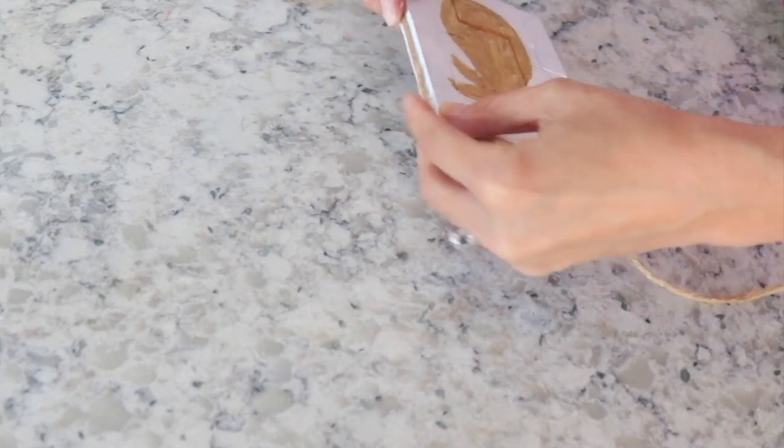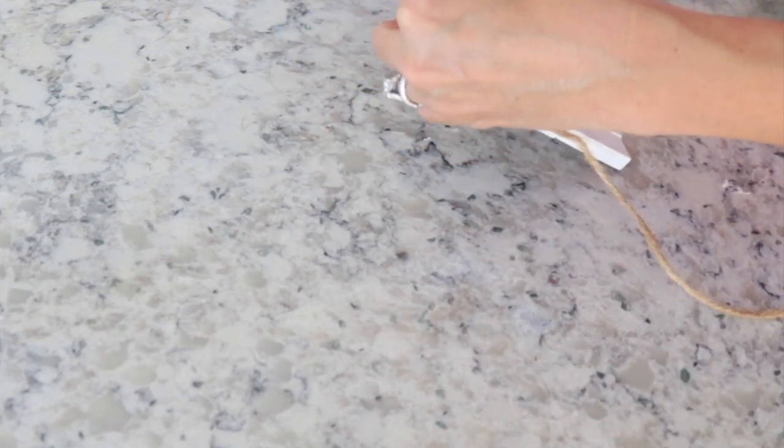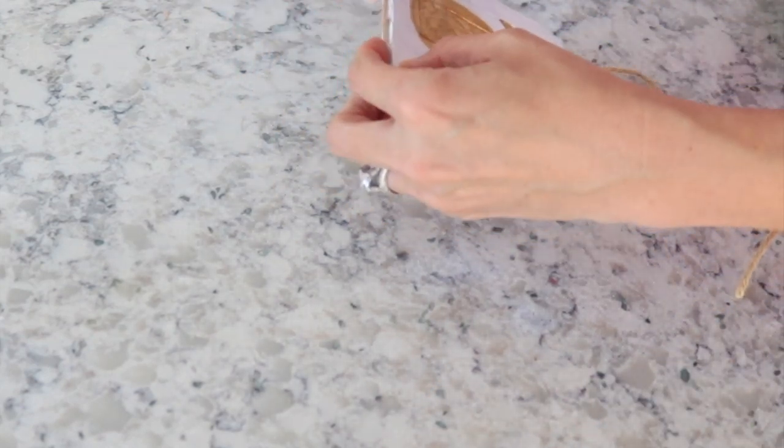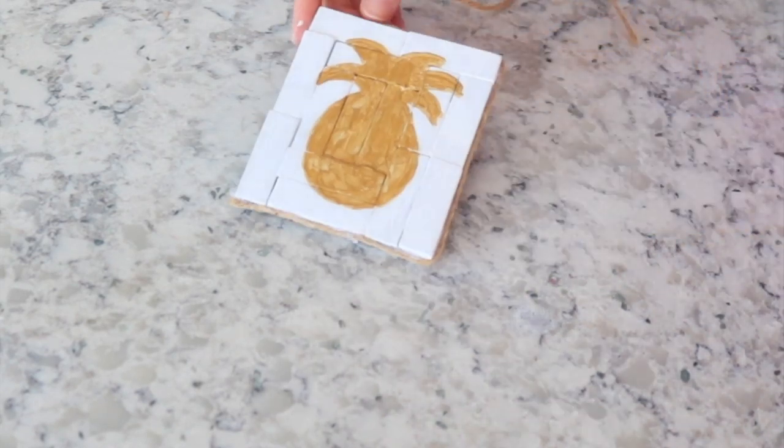Next I really liked how the home sign looked with the twine border kind of or frame whatever you want to call it. So I am actually going to do this with the coasters as well. So I'm just gluing the twine right on here and it's just going to kind of make it look a little more finished and I just think it looks cute like a little frame for it.